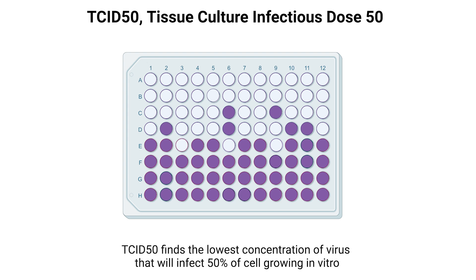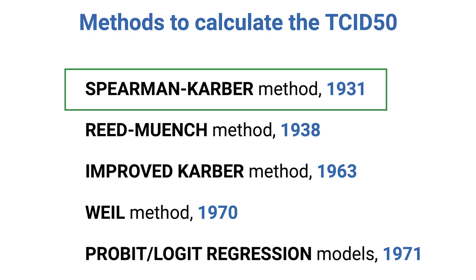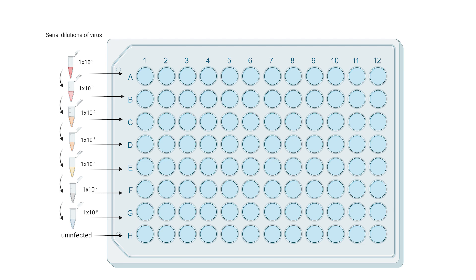Today, we're focusing on the Spearman-Kärber method. This method streamlines the process, eliminating the need for interpolation, which can sometimes complicate calculations. Like the Reed-Muench method, we begin with various virus dilutions inoculated into cell cultures, as we see here with our 96-well plate.